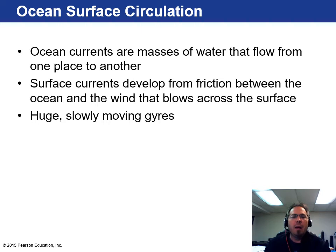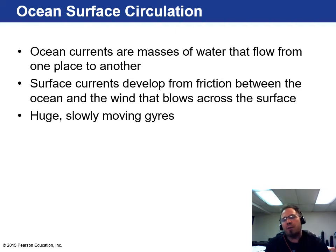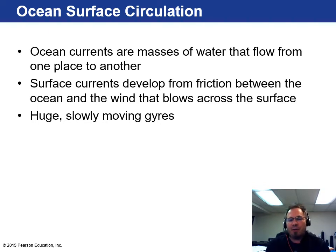The ocean isn't just a big body of water — there are actually currents, sort of rivers of ocean within the ocean, that flow from one place to another. Sometimes they're warm currents, sometimes cold. They develop because of the friction between the ocean and the wind blowing across the surface, creating a river effect. These are really slow but very noticeable, and they're called gyres.